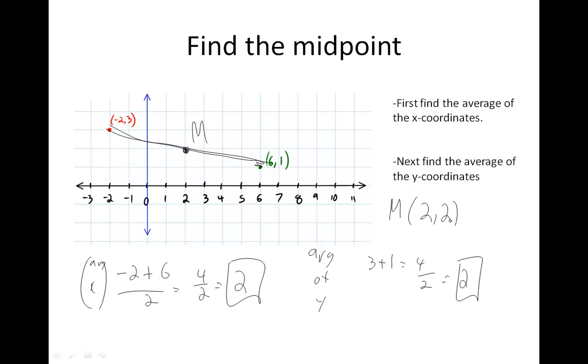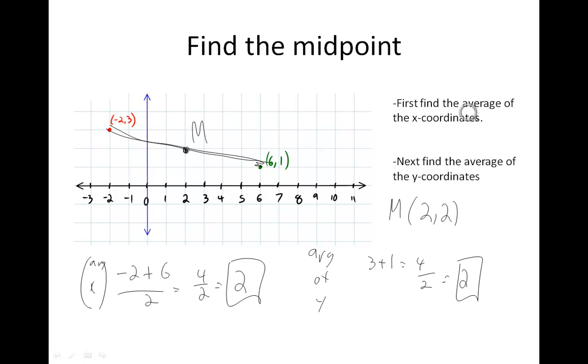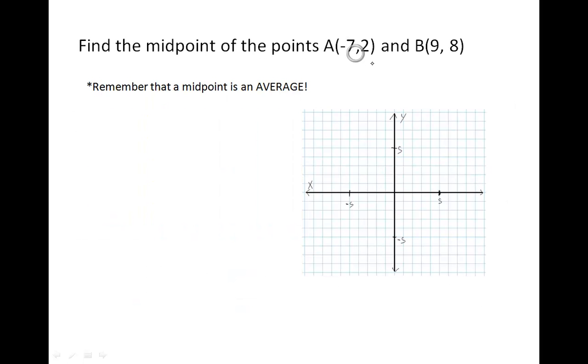So it's the average of the x's is the x-coordinate of your midpoint. Average of the y's is the y-coordinate of your midpoint. So if we want to call this M for midpoint, M is at the point 2, 2. That means it's 2 to the right and then 2 up. Let's try another one. So if you want, pause the video and try this on your own. Remember, all you're doing is finding averages. Average of the x's, average of the y's.